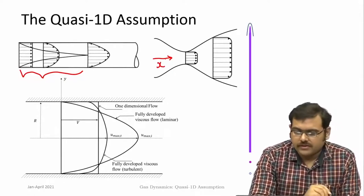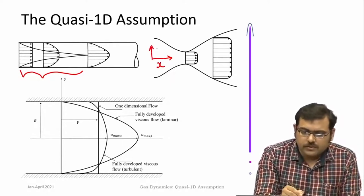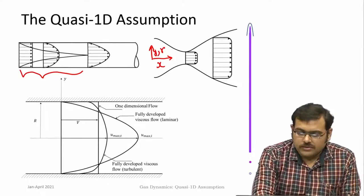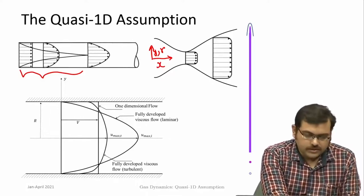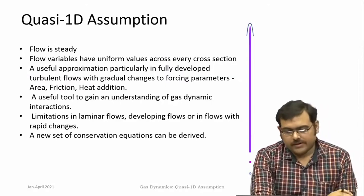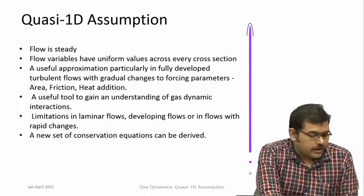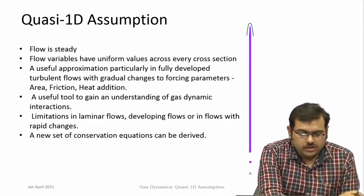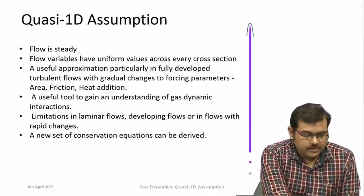Along the x direction they can change, but across the transverse coordinate — y, or r if you consider axis-symmetric — the flow variables are constant. This is the quasi 1D assumption. It is quite reasonably close to turbulent flows because their actual velocity profiles have a similar nature. It is a very useful tool in order to understand these different forcings due to area, friction, and heat addition.